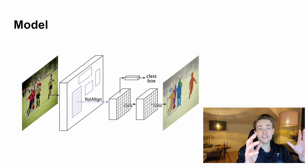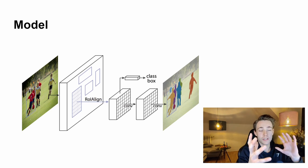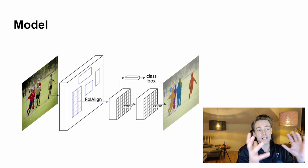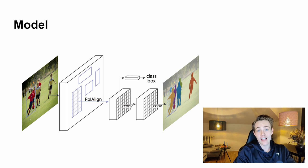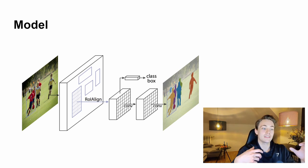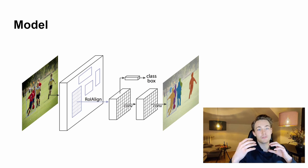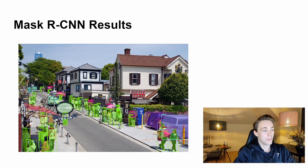So we get all this different information from our image: a number of different classes, all the masks, the bounding boxes, the regions of interest, and also the class names. We're going to see at the end of the video how we can actually implement this — take an image, pass it through the model, and get the results.